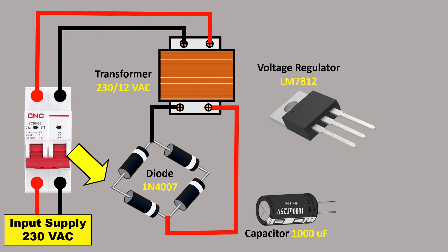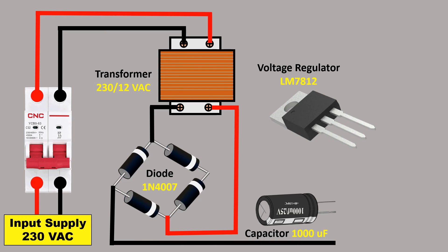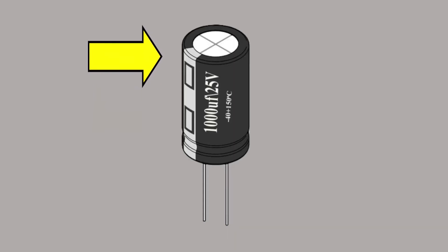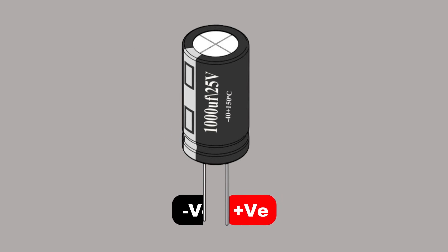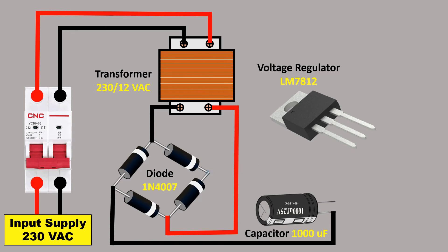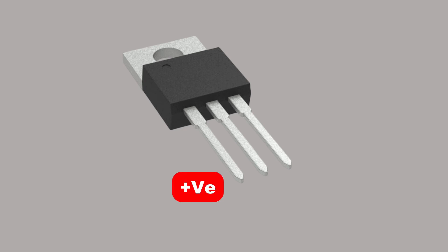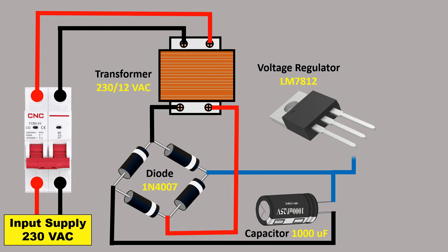Connect a wire from the diode output point to the capacitor. Provide negative power supply to the negative terminal of the capacitor — you can see a white strip on one side of the capacitor, and that is where you connect the negative wire. Then connect the positive terminal of the diode to the positive terminal of the capacitor. The first pin of the LM7812 voltage regulator is for input, so take the positive wire from the capacitor and connect it to this first pin.